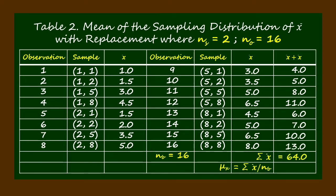From the table, we get the summation of the sample means equal to 64. Dividing 64 by the number of observations 16, we get the mean of the sampling distribution of means, mu sub x equals 4.0.